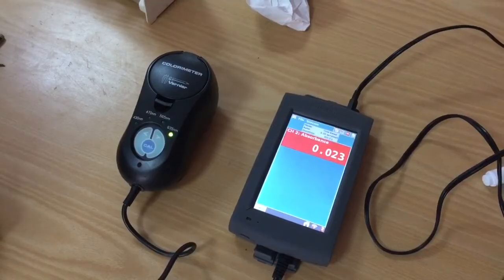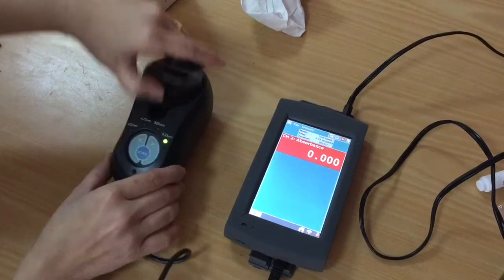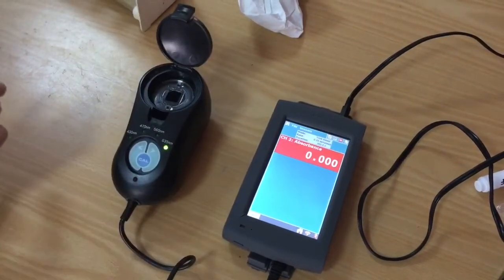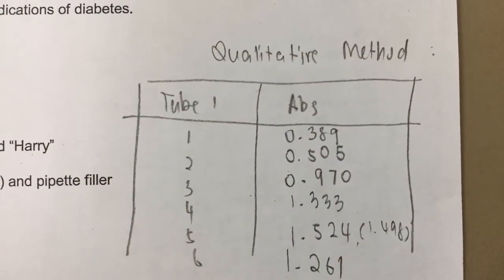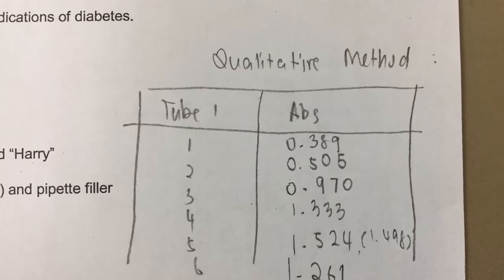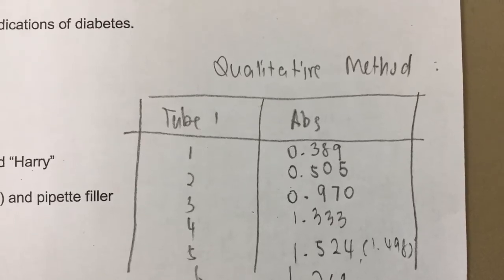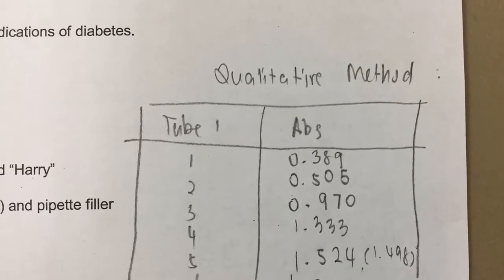I set up my colourimeter and I'm going to calibrate the colourimeter just with plain distilled water. As some of my results didn't quite fit the pattern, I have repeated some of the readings on the colourimeter and also checked the calibration using the distilled water cuvette.